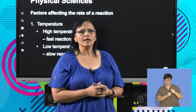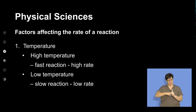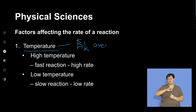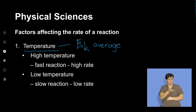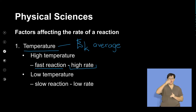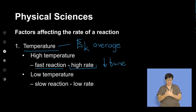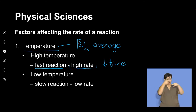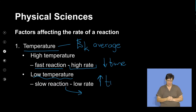The first factor is temperature. Temperature is a measure of the average kinetic energy of a substance. If a substance is exposed to high energy, it will have a fast reaction — we refer to that as having a high rate. If your temperature is high, you will have a fast reaction and a high rate. If your temperature is low, the reaction to form your product will take much longer — we refer to that as a low rate of reaction.